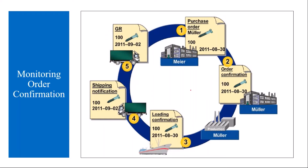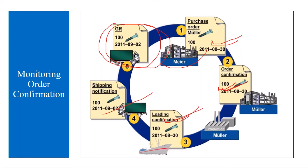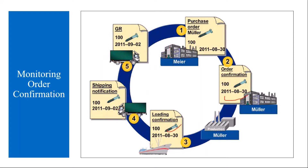In between the PO and GR, you can have these additional steps. In previous sessions, you just create a PO, give it to the supplier, the supplier supplies the material, and you do the GR directly. But optionally, you can have order confirmation, loading confirmation, and shipping notification. You can ask the supplier for this information for monitoring purposes.